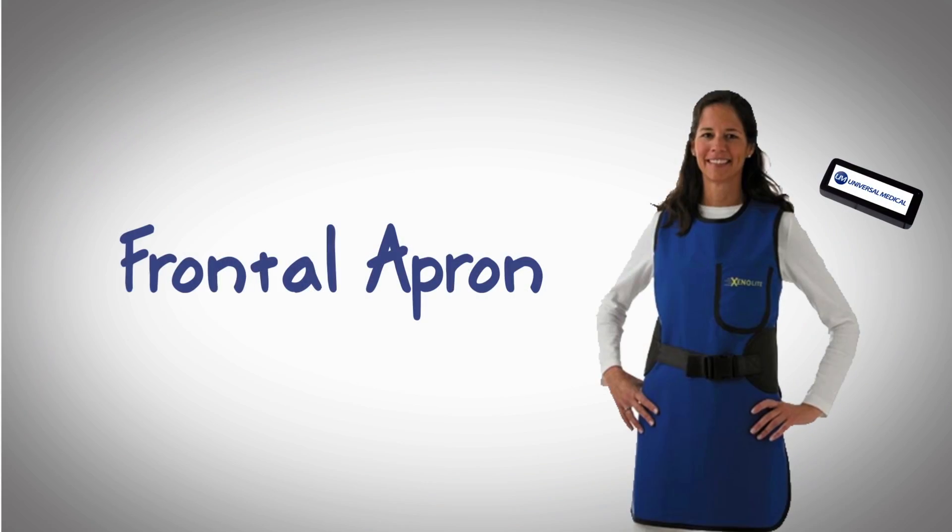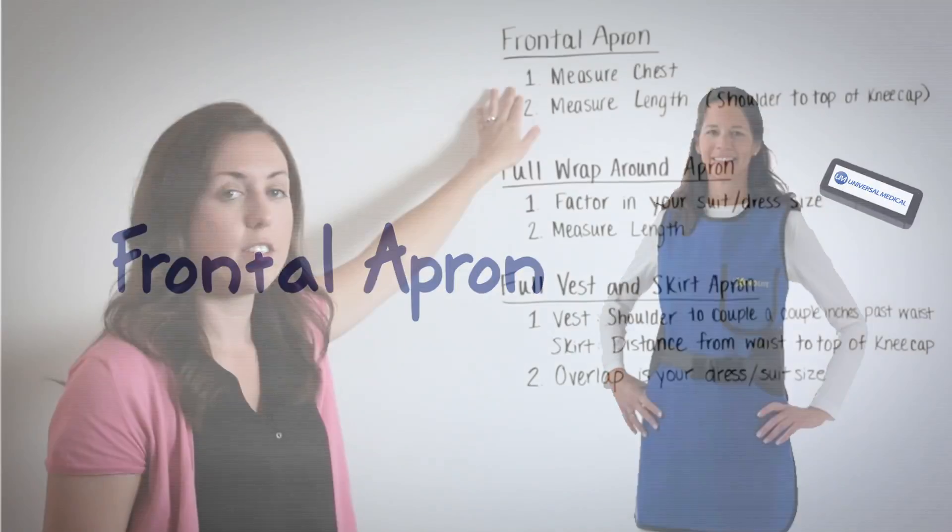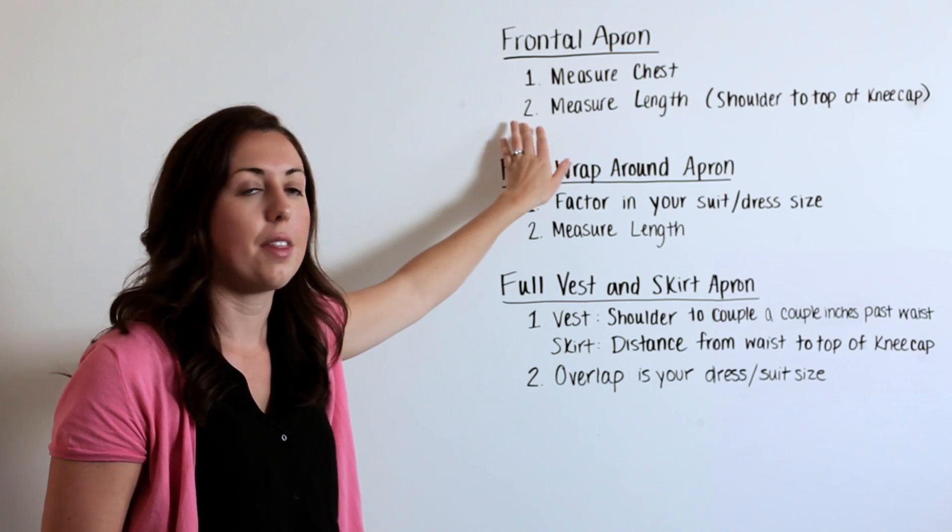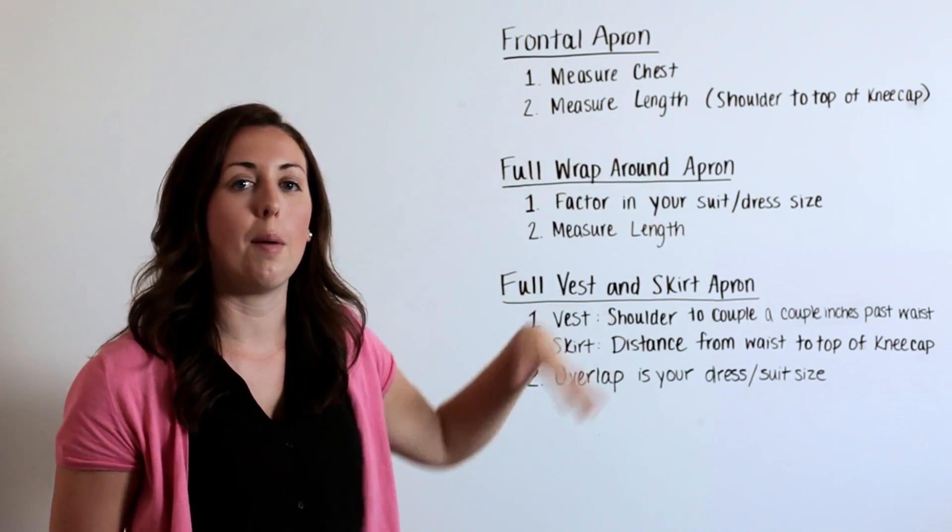If you have a frontal x-ray apron, you're going to want to first measure your chest. Then you're going to want to measure the length, and the length is the shoulder to the top of the kneecap.